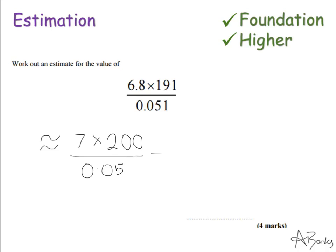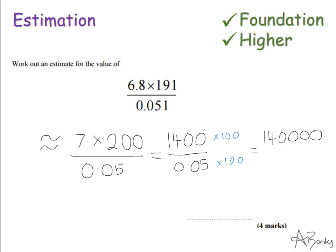Now I've got to work this out. I'll work out the top first: 7 times 2 is 14, so 7 times 200 is 1,400. I'm going to keep my bottom number the same. Now, there is a little trick I can do: if I multiply the top and the bottom by 100 to keep it an equivalent fraction, that will give me 140,000 on the top, and on the bottom I'll just be left with the number 5. So the final step is 140,000 divided by 5, which is 28,000.